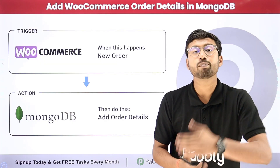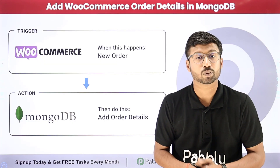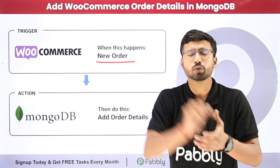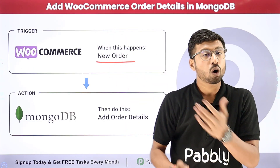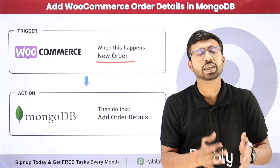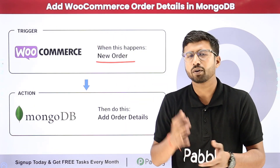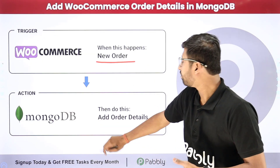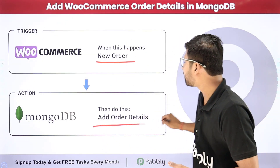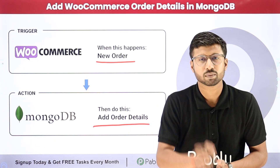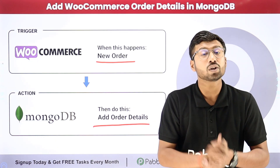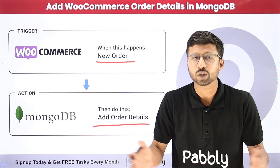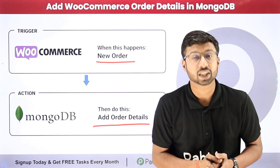You can completely automate this process. In this automation, as we receive a new order on our WooCommerce store, all the details of the order — like the customer details, customer address, total amount, and the details of the products ordered by the customer — will be added in our MongoDB database. If you want to learn how to set up this complete automation all by yourself without any coding skills or technical knowledge, just come with me to my screen.